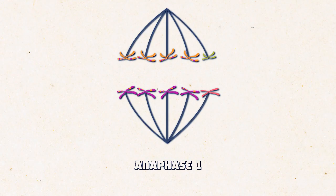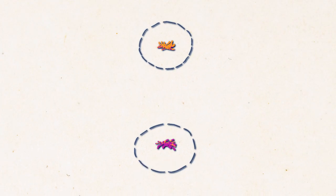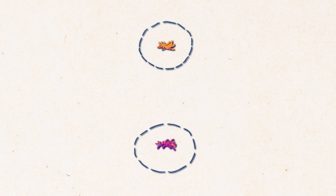Spindle fibers start to retract towards opposite poles of the cell and they carry the chromatids with them. When 46 chromatids reach towards the opposite poles, the stage completes and the nuclear membrane starts to form again.